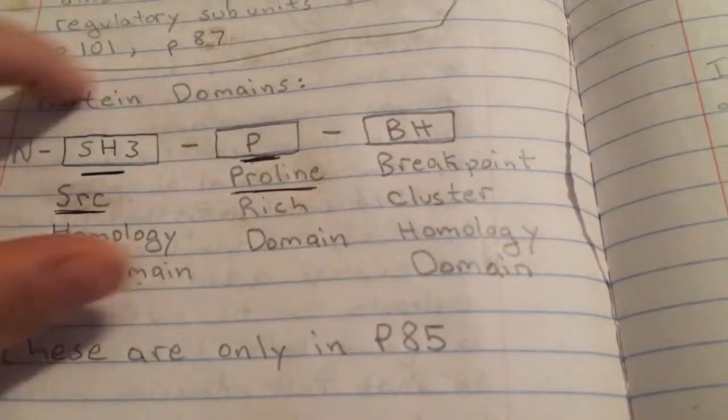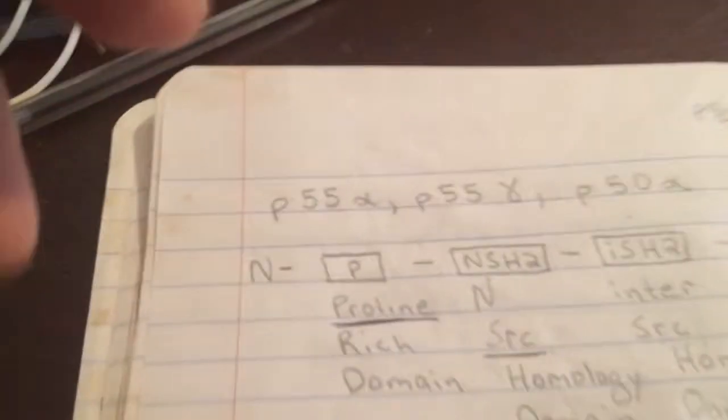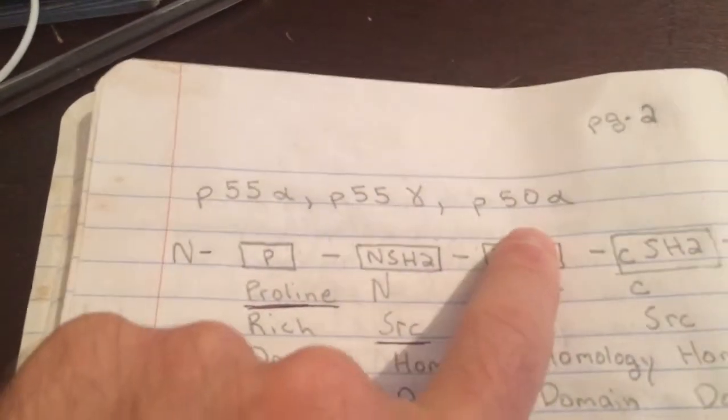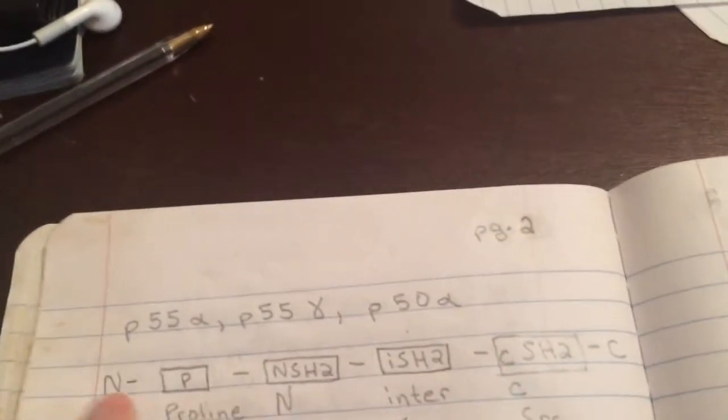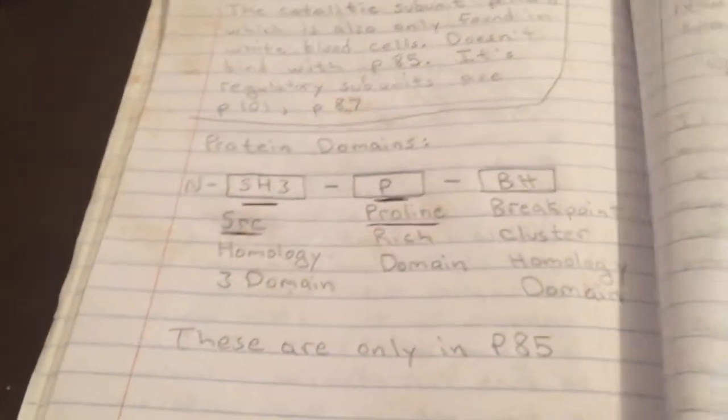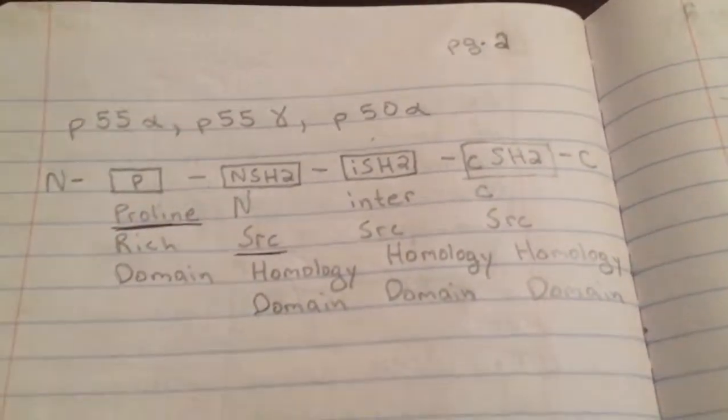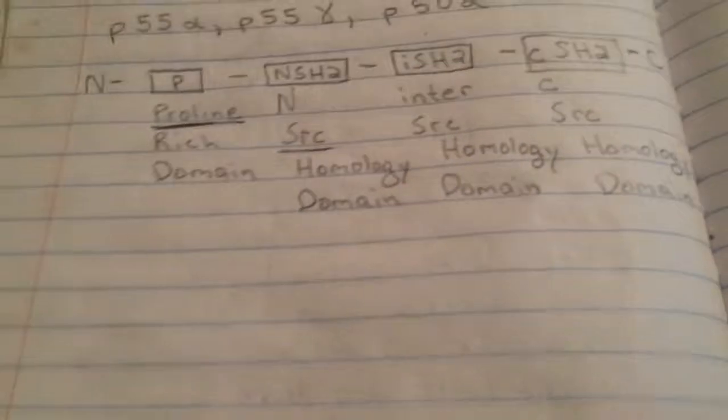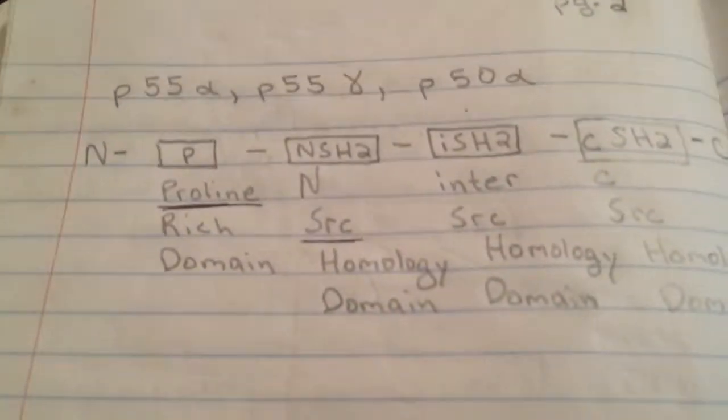P85 has smaller subunits that still work perfectly well on the P110 alpha or P110 beta catalytic subunits. They could still work perfectly fine with the smaller subunits, which means if you're an evolutionary biologist, you might want to look at why this is still here. This seems to be a region that's becoming obsolete. So if you're into evolutionary biology, this might be something that you'd want to look at because P85 right here will extend over to the smaller ones.